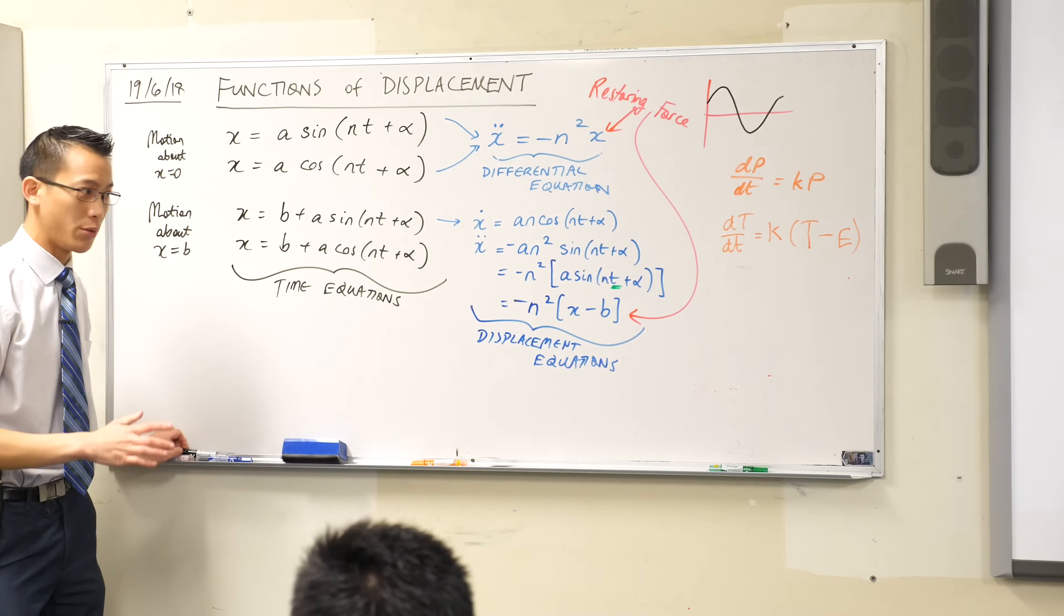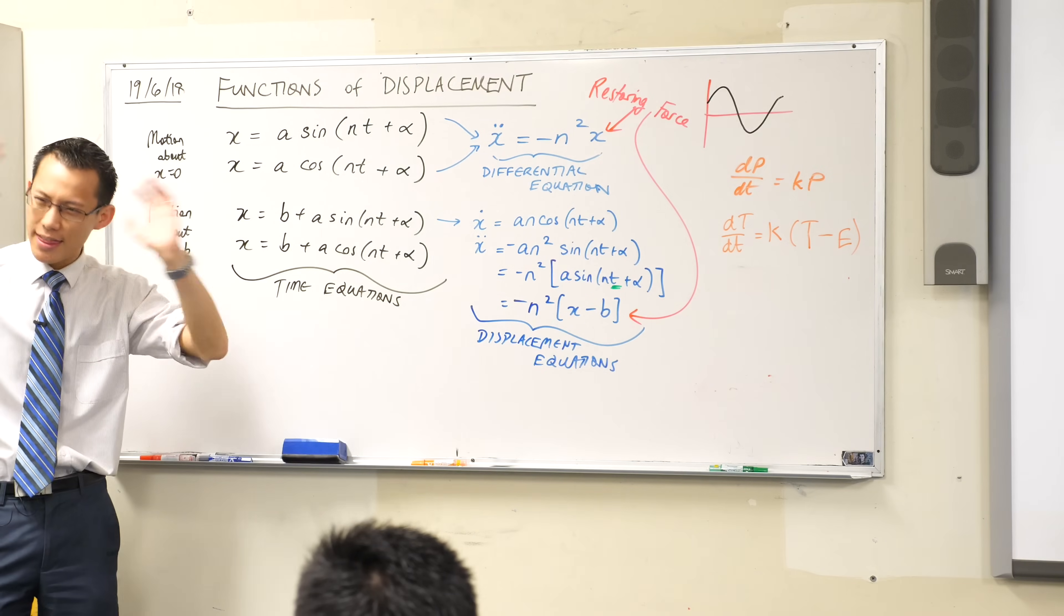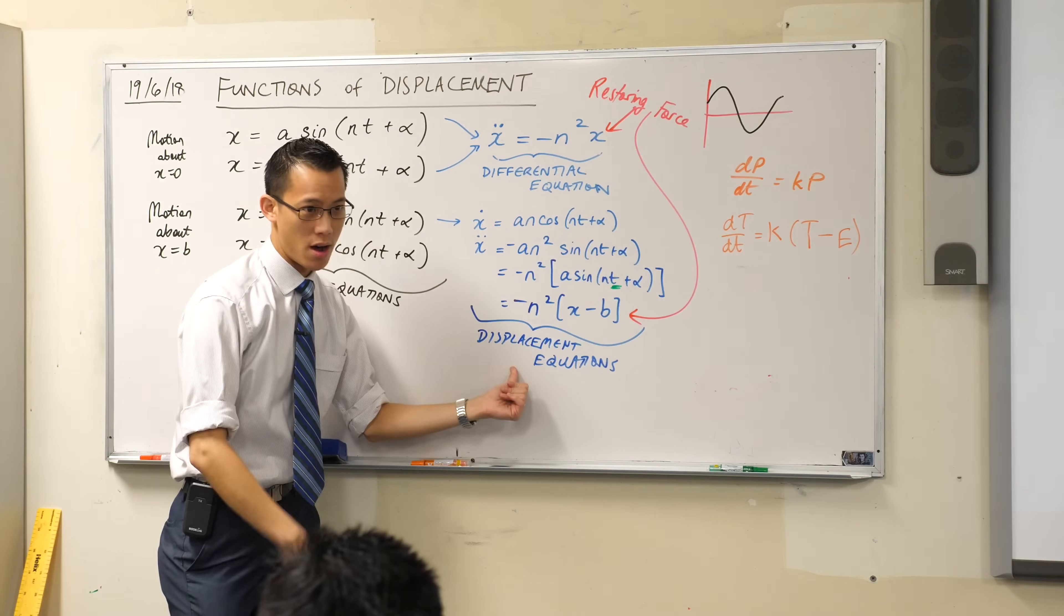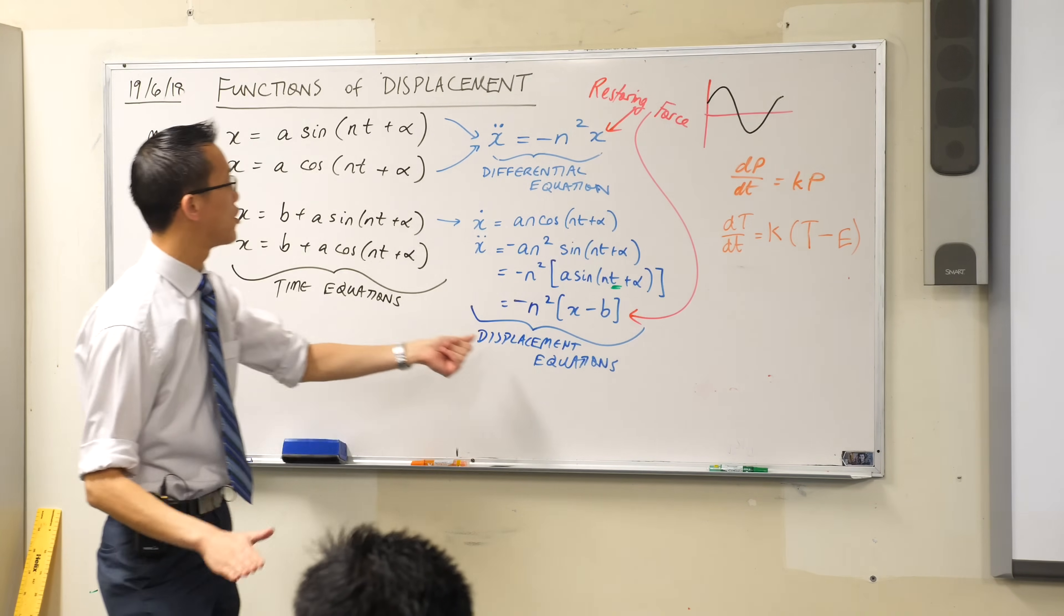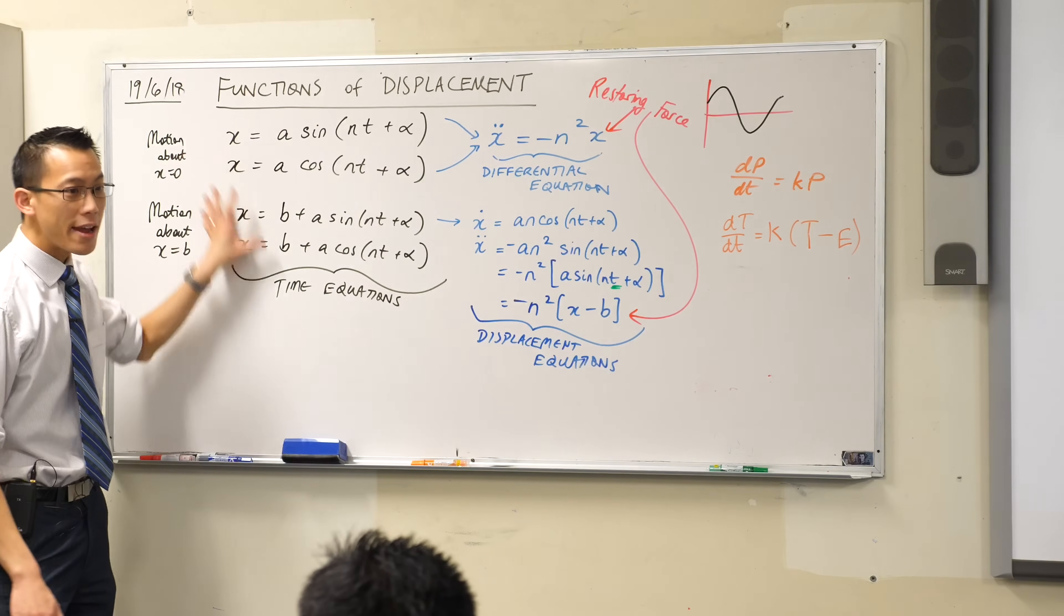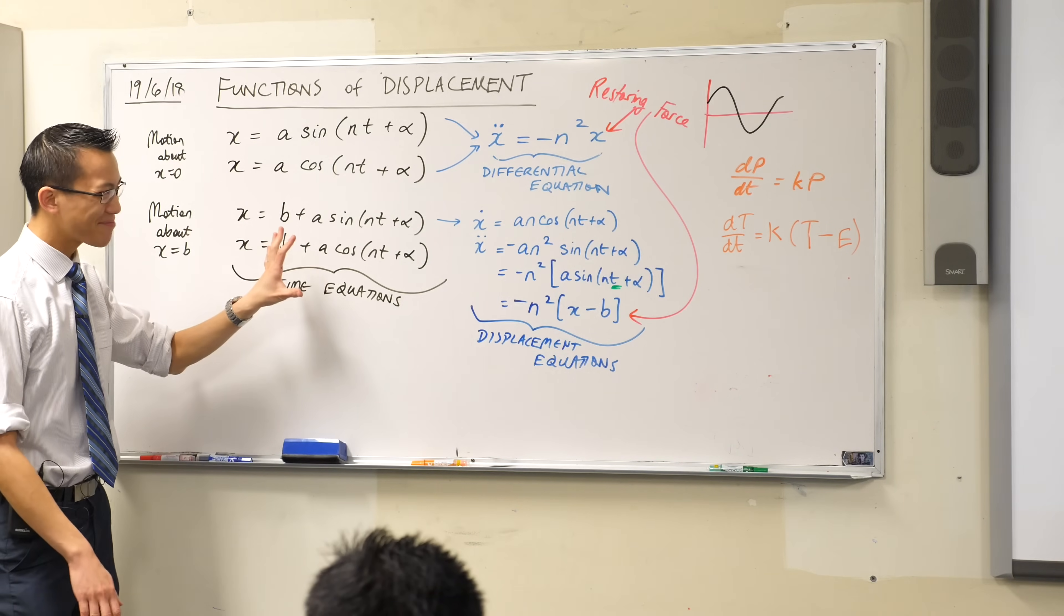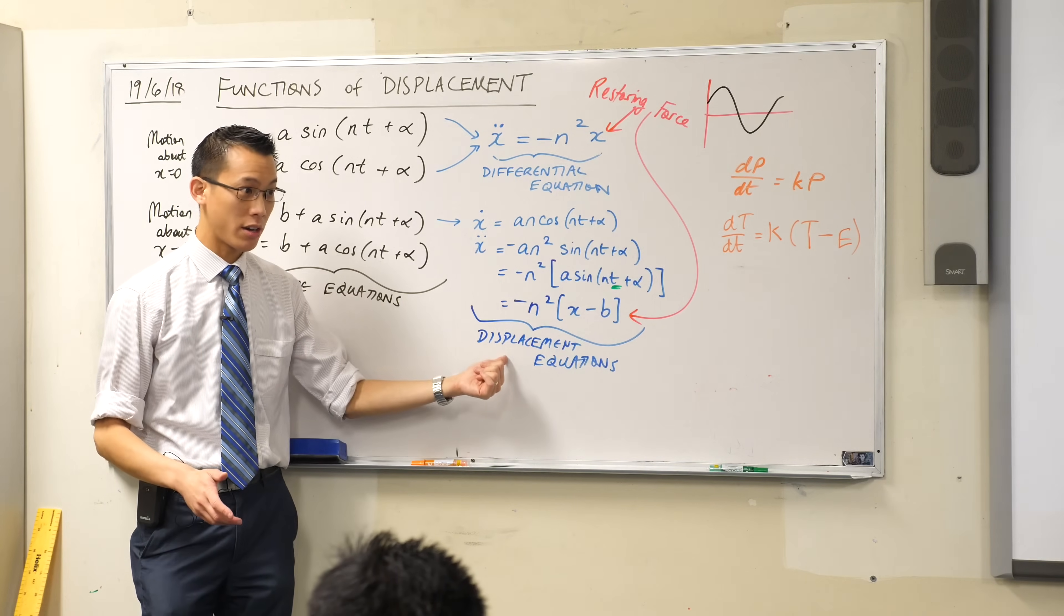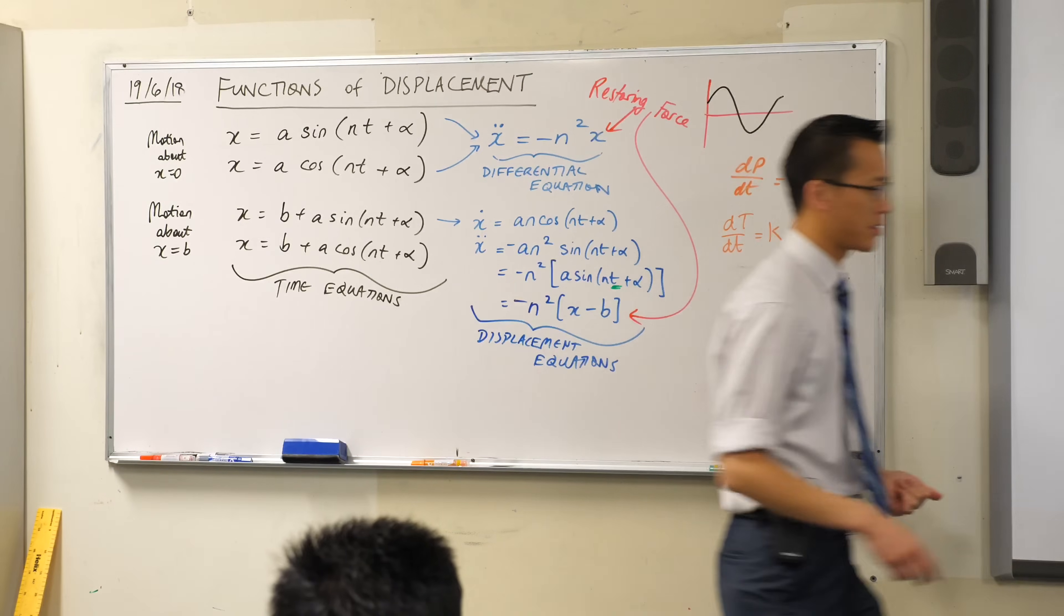So what we're going to do is, now that we can realize that we can think about things not just in terms of when you are, but where you are, we're just going to take a brief excursion away from simple harmonic motion to all the different kinds of motion you can think about where things are in terms of the displacement. So I want to give you two examples of this really quickly.